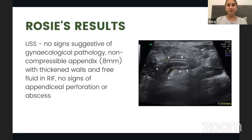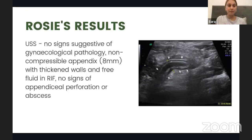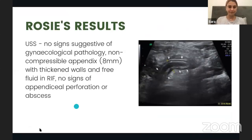For Rosie, we opted for an ultrasound. It shows no signs of gynaecological pathology. However, the appendix is non-compressible with a diameter of 8 millimetres — anything above 6 millimetres is suggestive of inflammation and appendicitis. The walls are thickened, which is a sign of appendicitis, and there is some free fluid in the right iliac fossa. As the obstructed appendix continues to secrete fluid, some of it seeps out, which is another sign of inflammation. On ultrasound, there are no signs of appendiceal perforation or abscesses.